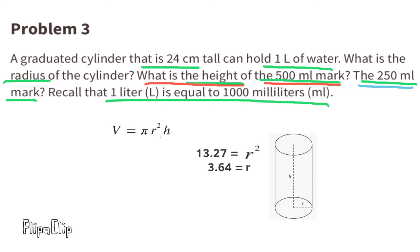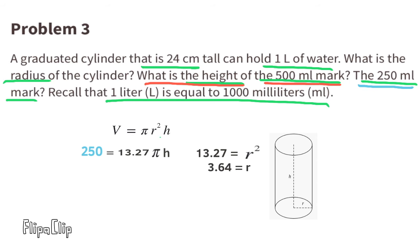They also ask: what is the height of the 250 milliliter mark? Since 250 is half of 500, we can cut the 12 centimeters in half to get 6 centimeters. Or we can substitute V with 250, solve for h by dividing both sides by 13.27 times π, and the height is 6 centimeters.